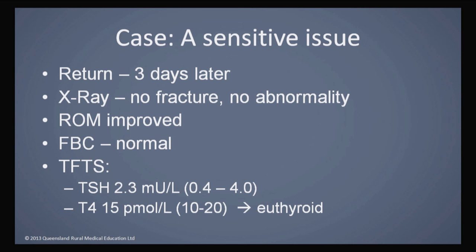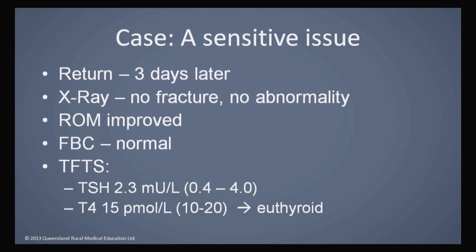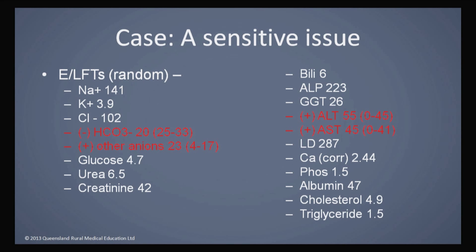I saw her three days later. The x-ray was absolutely normal, her range of motion had improved remarkably, and she was able to weight-bear without crutches. Her full blood count was entirely normal and thyroid function tests were also normal — she was euthyroid. There were some minor abnormalities in her electrolytes and liver function tests — the bicarbonate surprised me as it was a little low, and the LFTs were slightly off — but she looked pretty well.